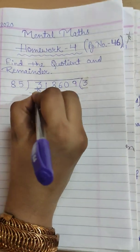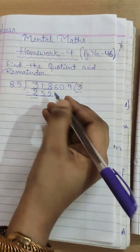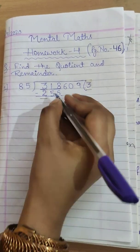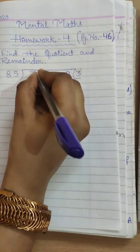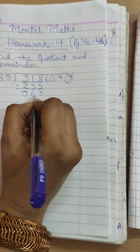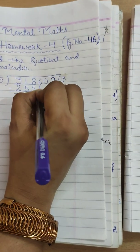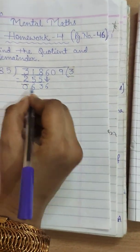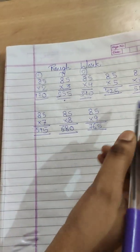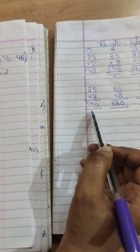255 as you can check. So we will take 85 threes are and write it in our notebook here. 85 threes are 255. Now we will subtract it. 8 minus 5, 3. Here we will take borrow. 11 minus 5, here will be 6, and 2 minus 2, 0. We will subtract it. Now 63 is left.